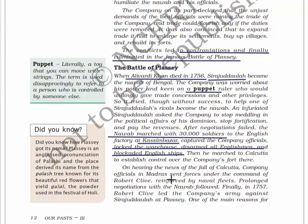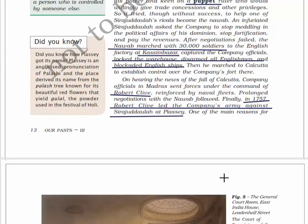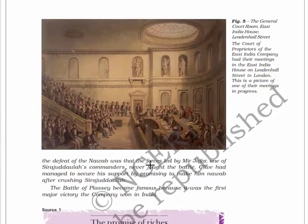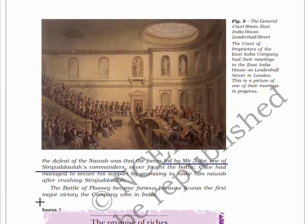The Nawab then marched to Calcutta to establish control over the company's fort. On hearing the news, company officials in Madras sent forces under the command of Robert Clive, reinforced by naval fleets. After prolonged negotiations with the Nawab, finally in 1757 Robert Clive led the company's army against Siraj ud-Daula at Plassey. One of the main reasons for the Nawab's defeat was that the forces led by Mir Jafar, one of Siraj ud-Daula's commanders, never fought the battle. Clive had secured Mir Jafar's support by promising to make him Nawab after crushing Siraj ud-Daula.